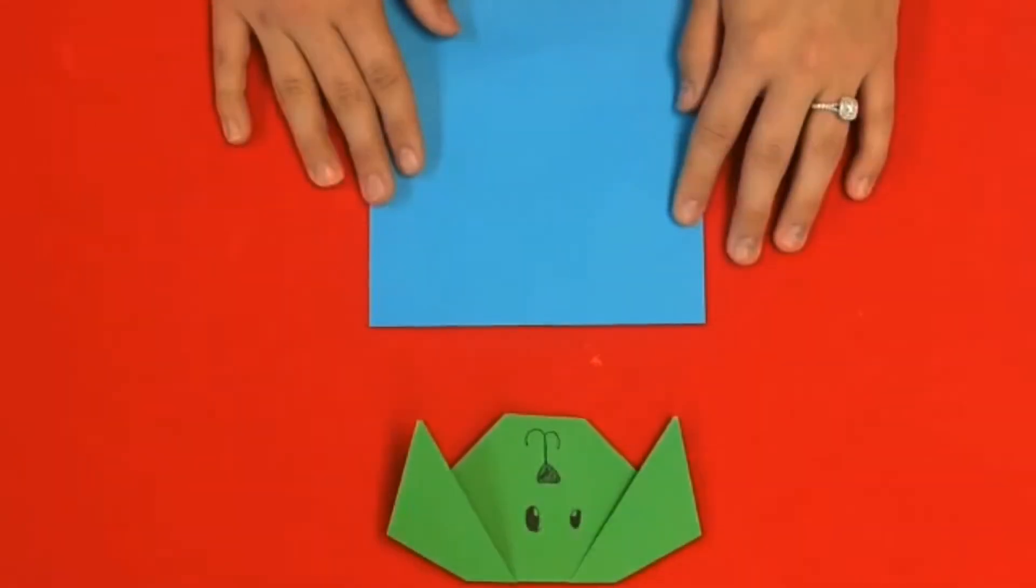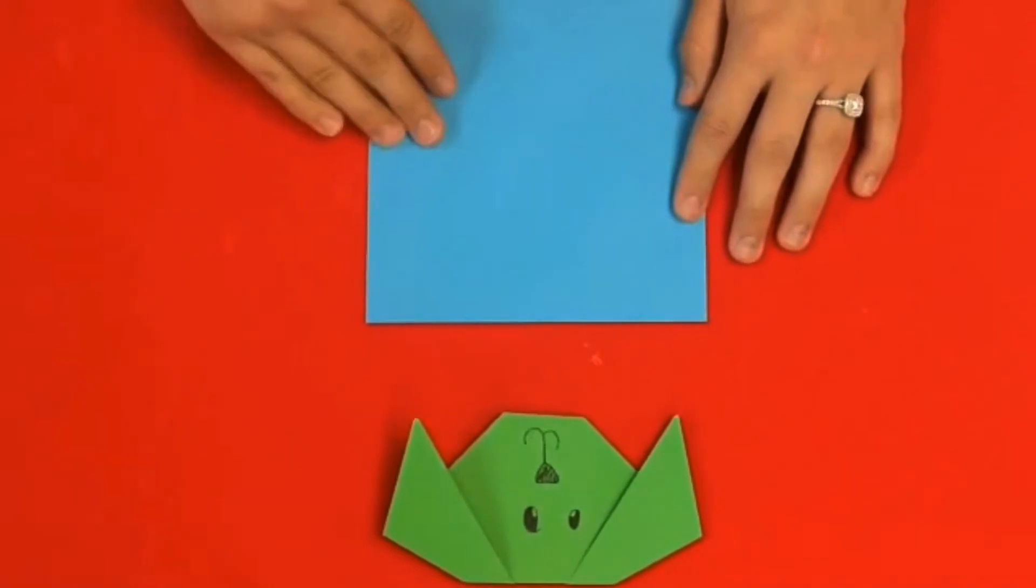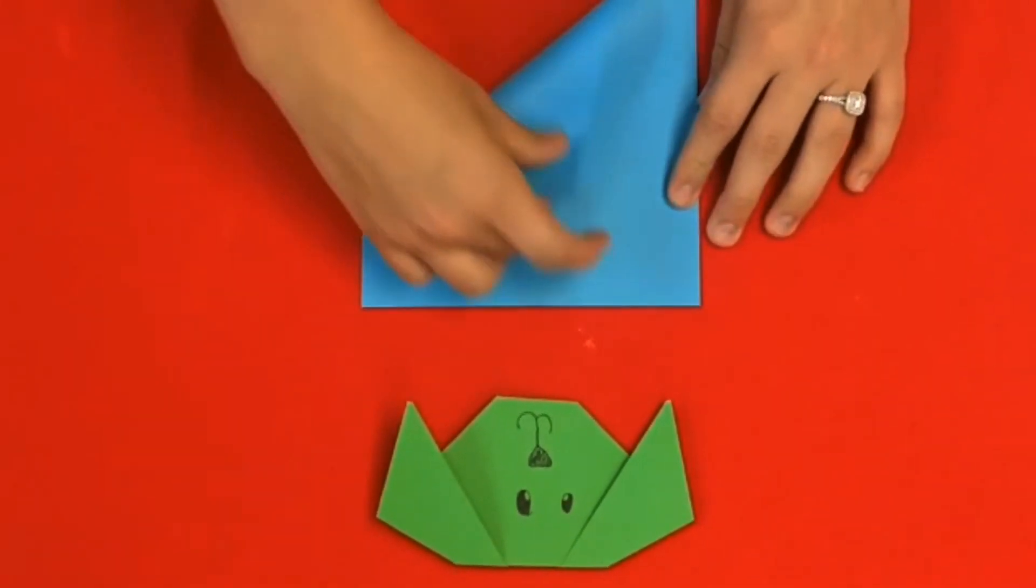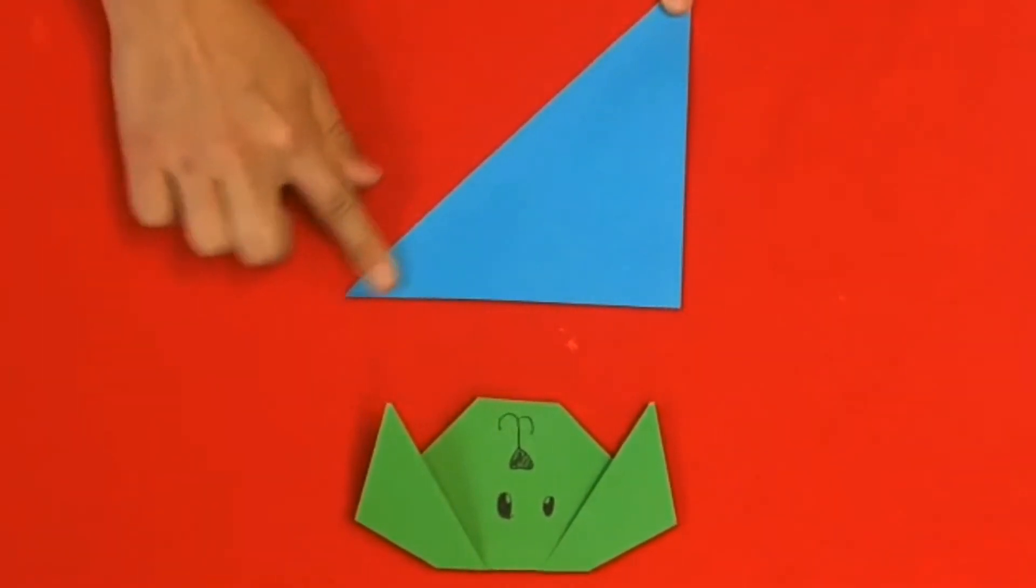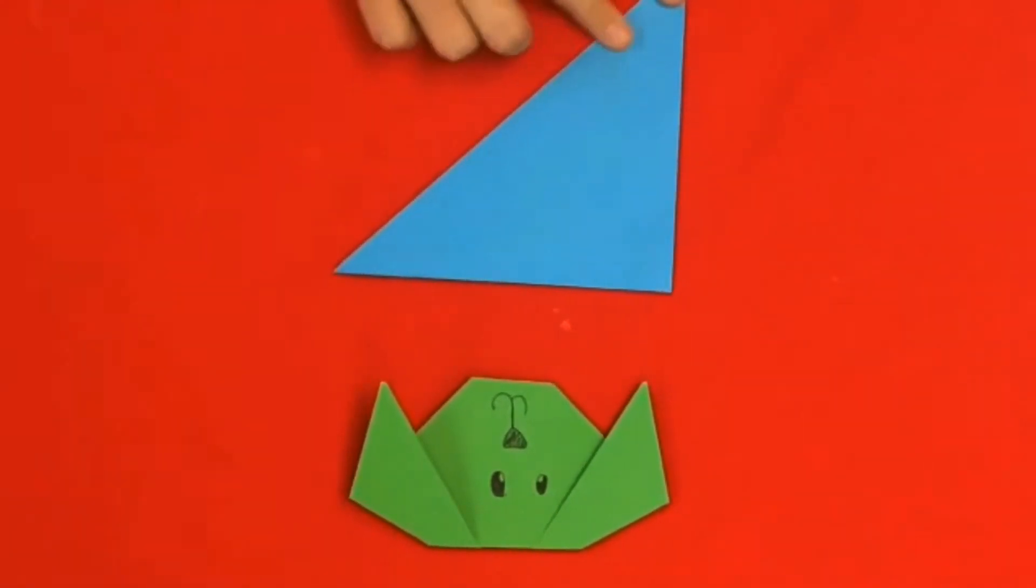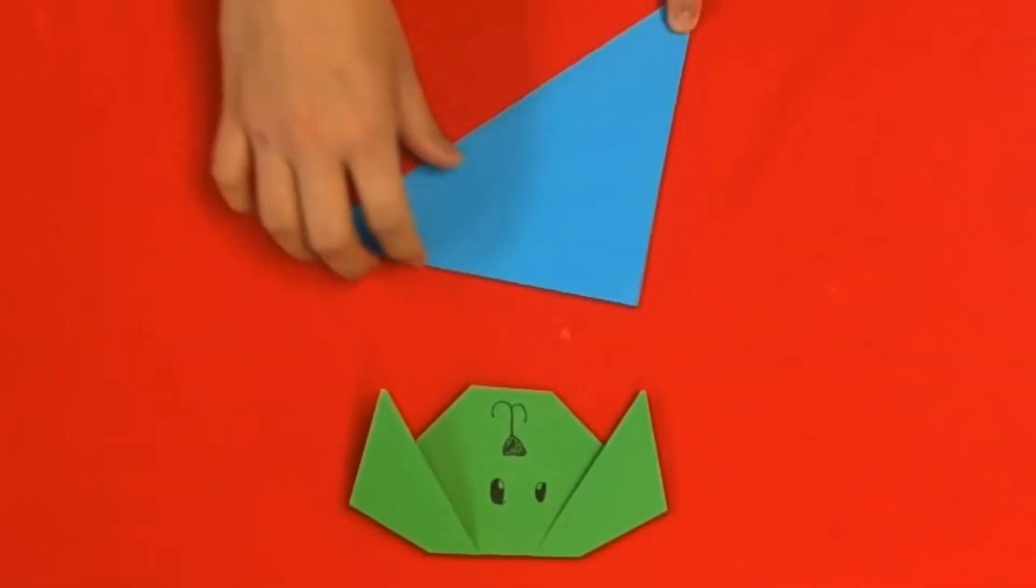For your second activity, you're going to make an origami dog. Start by folding a square piece of paper diagonally. Make sure you get a nice crease. You can go over it with your fingers a couple times. You should now have a triangle.